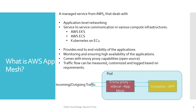For example, AWS EKS, AWS ECS, and Kubernetes on simple EC2 — these are different flavors where AWS App Mesh comes into picture. It provides end-to-end visibility of applications, enables monitoring capability, and ensures high availability of downstream applications. It comes with the Envoy proxy capabilities. Envoy is open source, and it also provides measurement of traffic flow, customization of traffic flow, and logging based on your requirement.